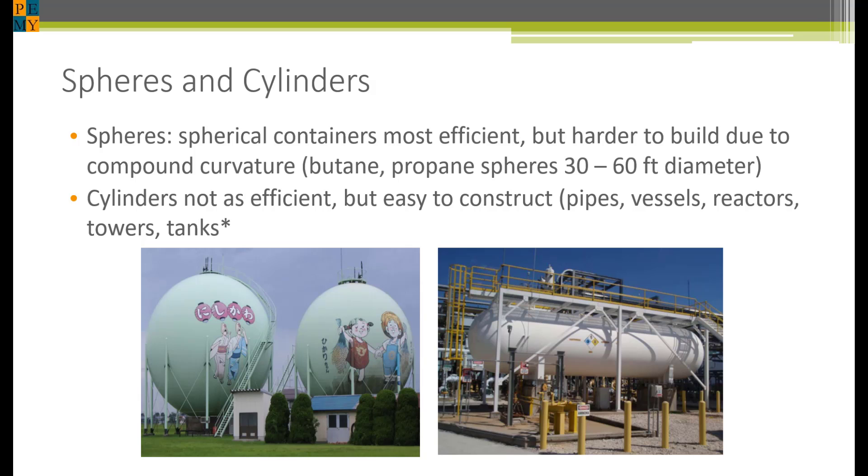A cylinder, on the other hand, can be rolled and curved on a simple rolling machine. As proof, you can take a sheet of paper and easily roll it into a cylinder, but try to make a sphere from another sheet of paper. See what I mean?